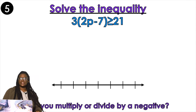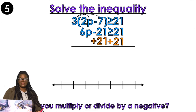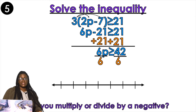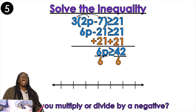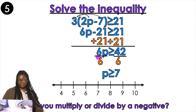What are you going to do first? Distribute the 3 — I know you know this because you're a scholar. So 6p minus 21 is greater than or equal to 21. Add 21. 6p is greater than or equal to 42. Divide by 6. Is that a negative? No, it is not — so am I going to flip the symbol? No. P is greater than or equal to 7. Open circle or closed circle? Closed. Left or right? Right. Good job.